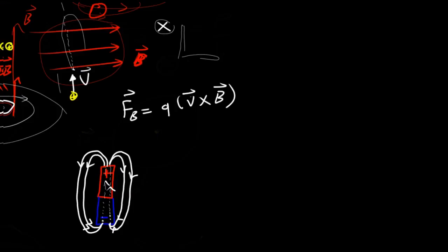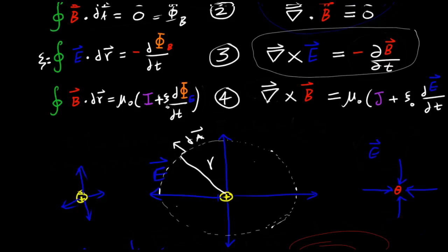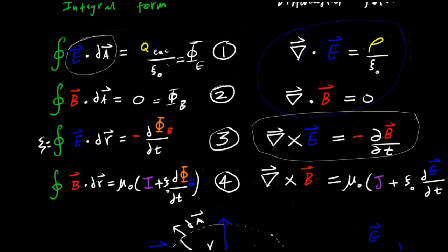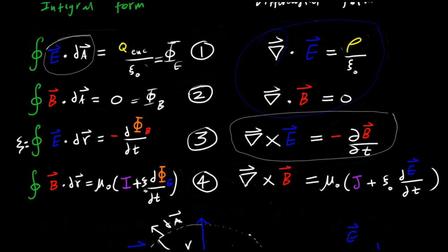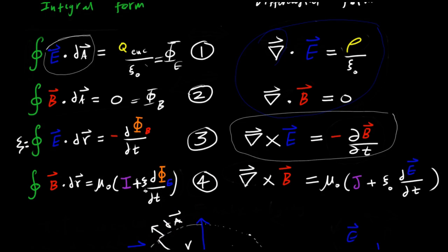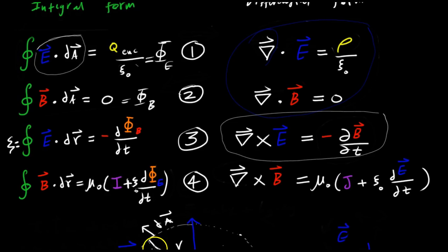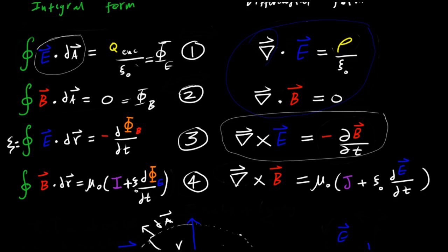These four laws explain every electric and magnetic phenomenon related to charges in the universe that we have observed so far. In the next video, we're going to see how our abstractions are going to simplify these equations so that we don't need them every time we want to do a simple engineering calculation. I'm way overdue in this video, so I'll see you guys in the next one. Thank you.